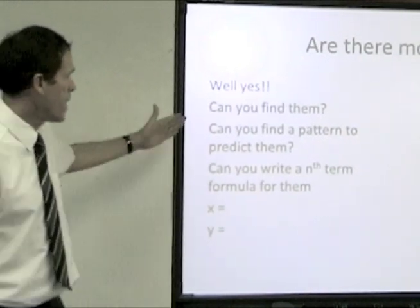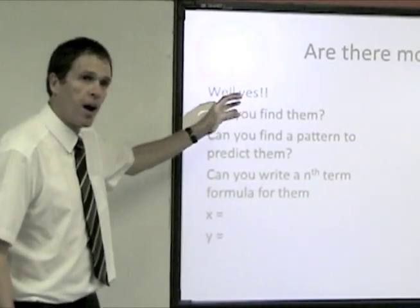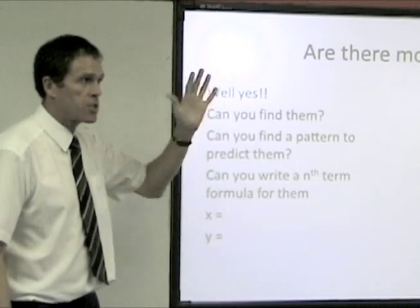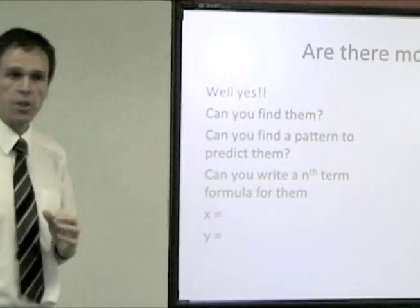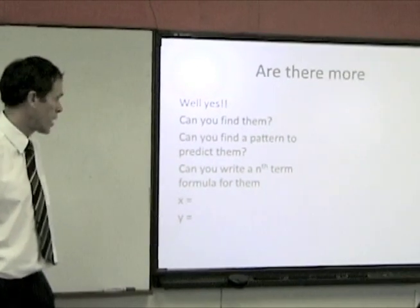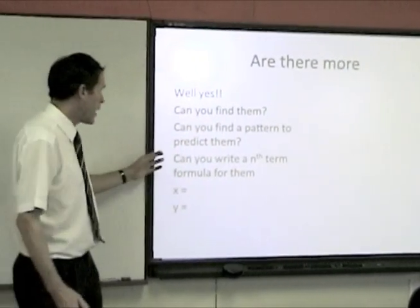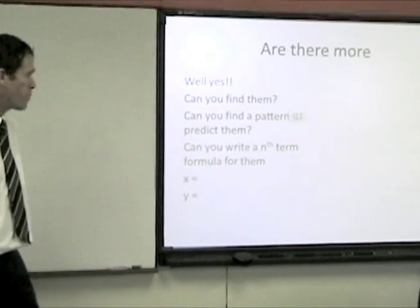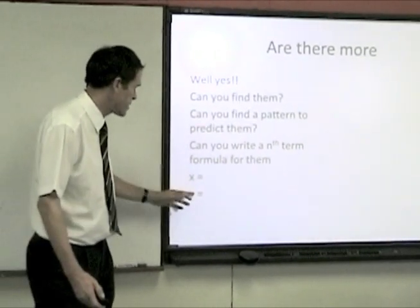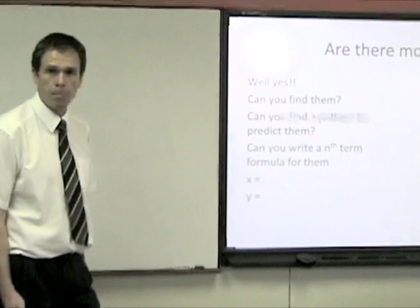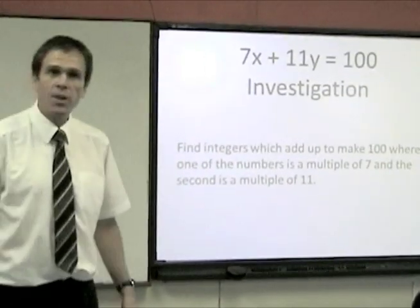If we were, I could go through and I could find the different x and the different y integers where 7x plus 9y is equal to 100. And I could actually see a pattern in them. And I could write an nth term formula for them. In terms of the x number and in terms of the y number. Why am I not continuing?